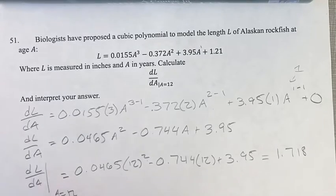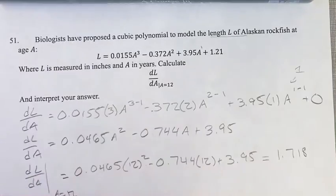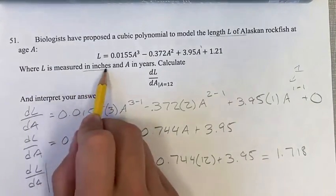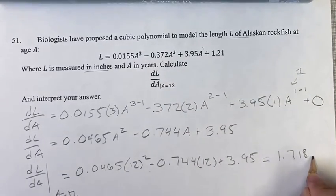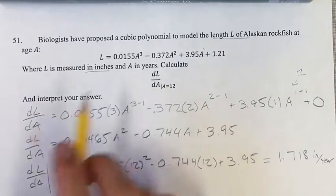And so this is the derivative. What does that actually mean? We're looking to interpret the answer. This is the rate of change of the length of the Alaskan rockfish over age A. So this is going to be inches per year, and that's the rate of growth of the Alaskan rockfish per year.